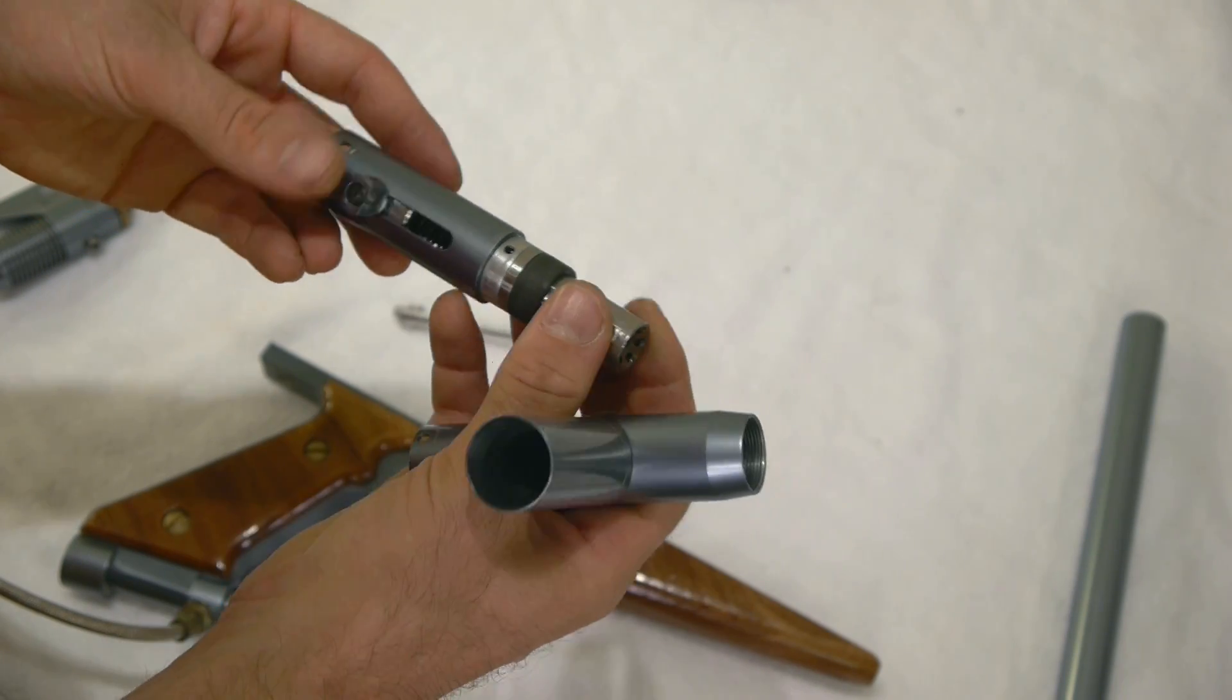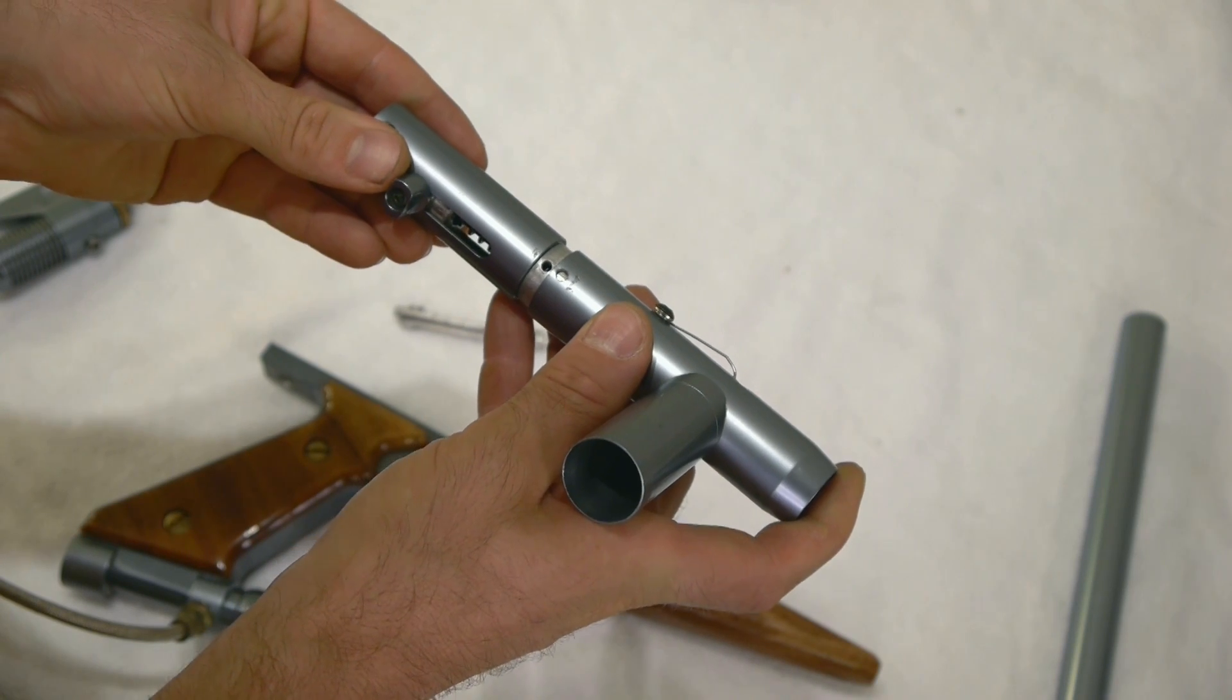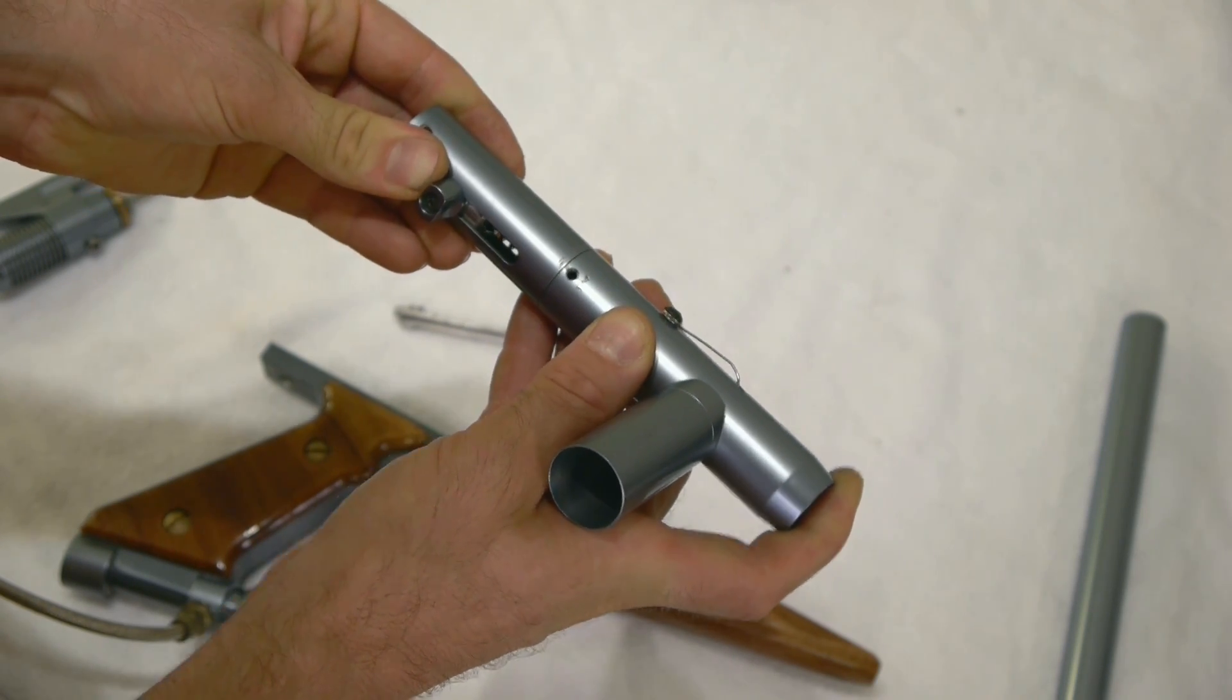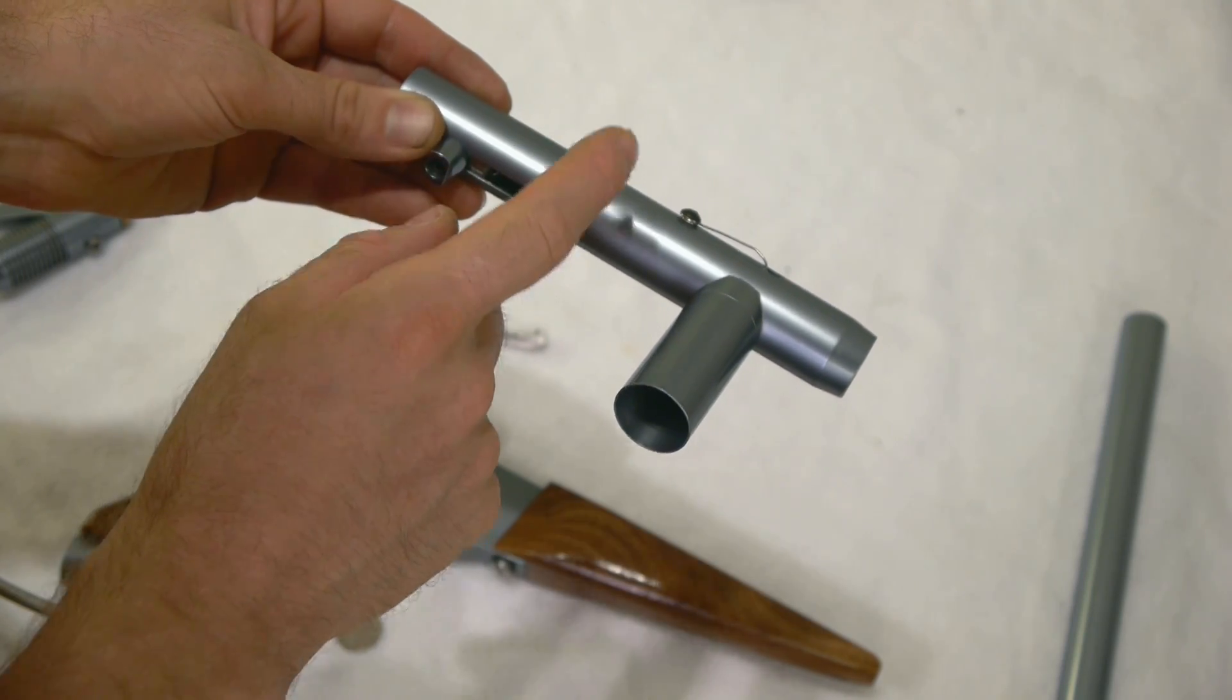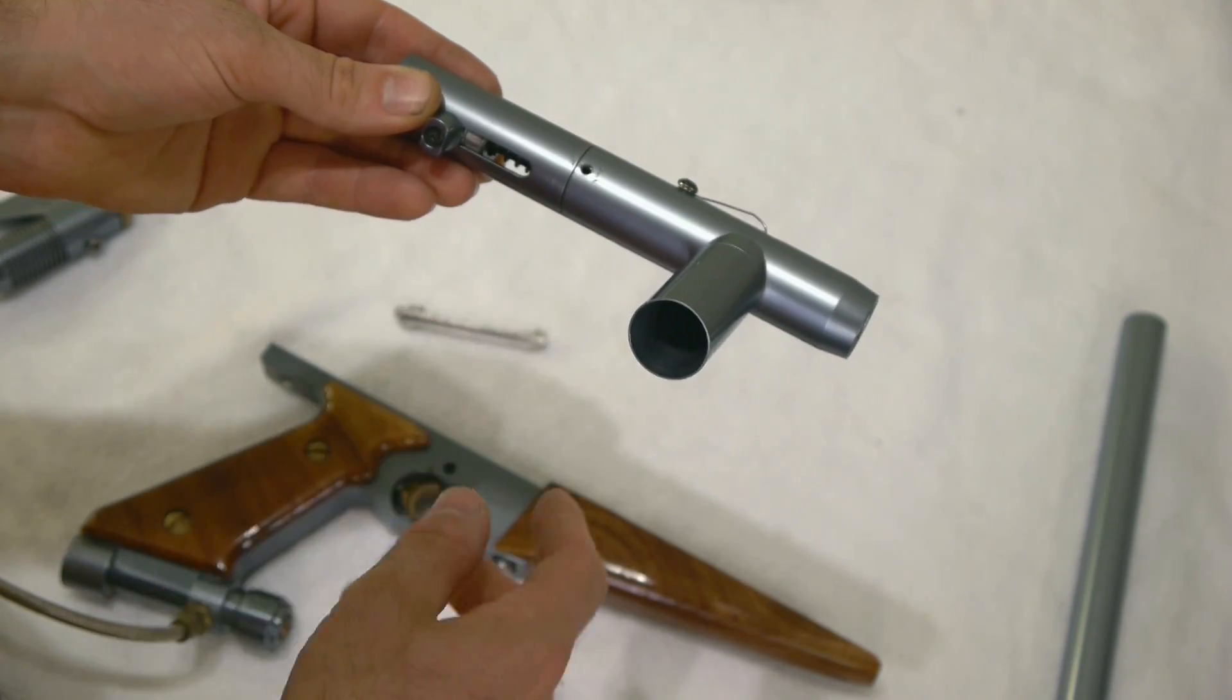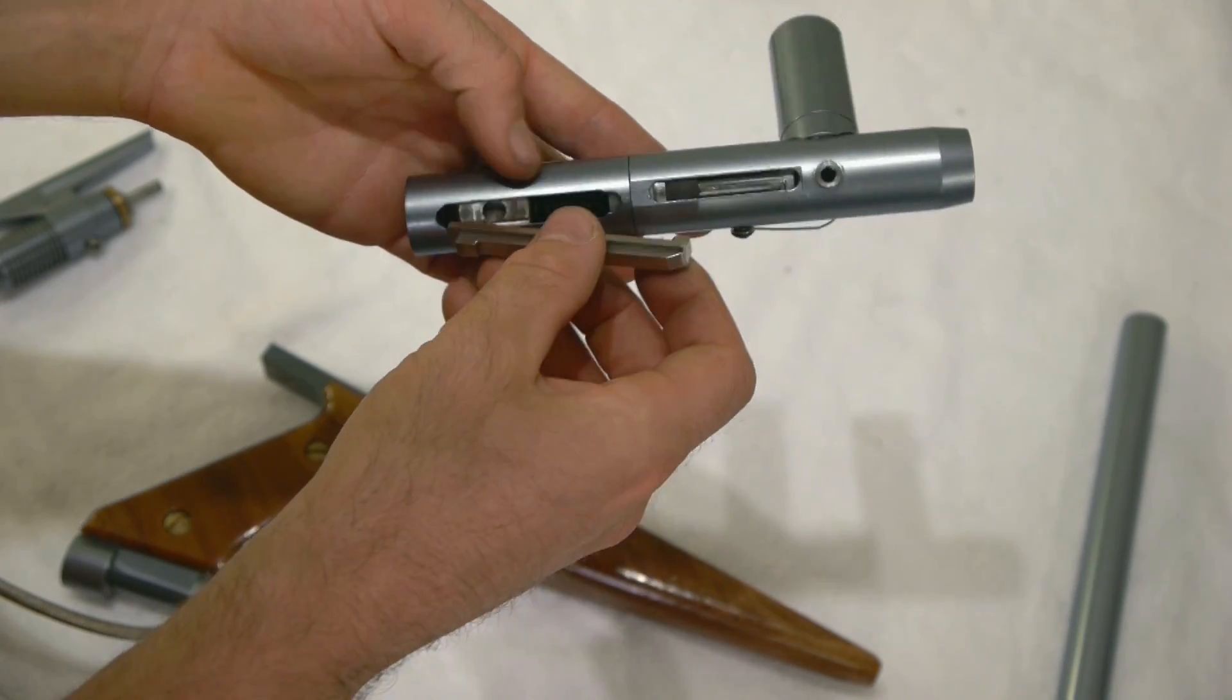With that off, we can take the body off the grip frame rail. Now we can see the linkage latch which connects the bolt to the hammer. Just pull that off - it's a stainless piece. Now we'll take the three portions of the body apart.